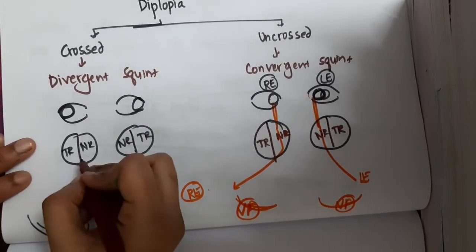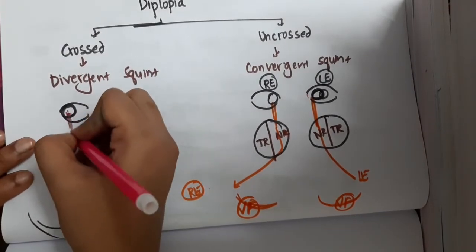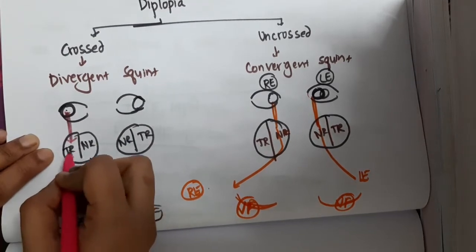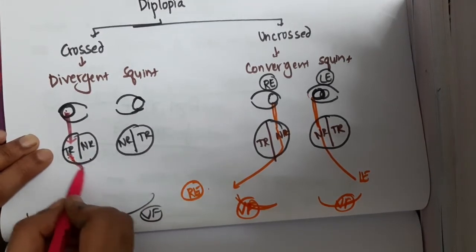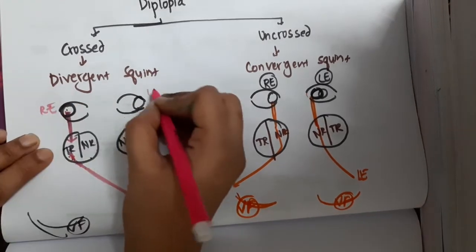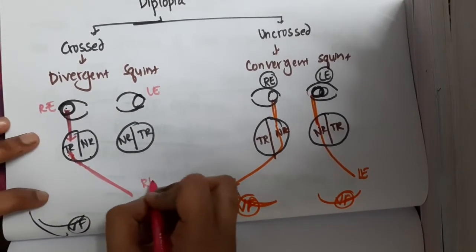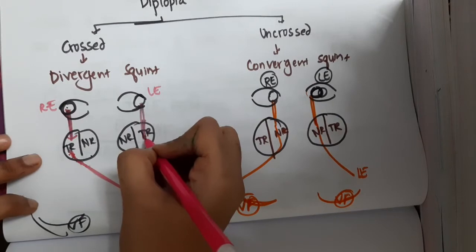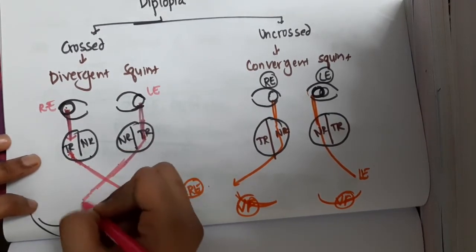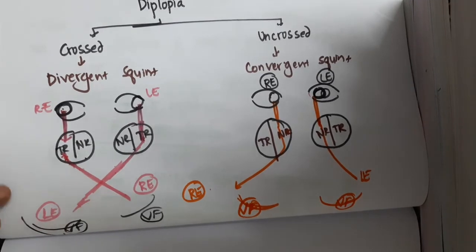Now see the nasal retina of this eye — the fibers are in the temporal retina. The image from the temporal retina is produced like this. The right eye temporal retina will produce the image to the nasal side. Whereas the left eye temporal retina will produce the image to the lateral, or nasal, visual field. So you can see that the images are crossing each other, and as a result this type of diplopia is called crossed diplopia.